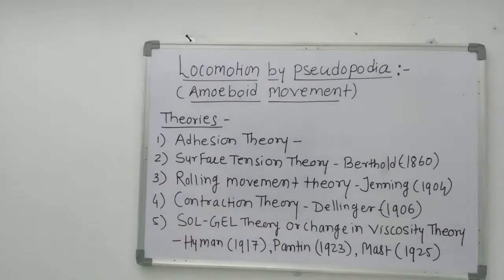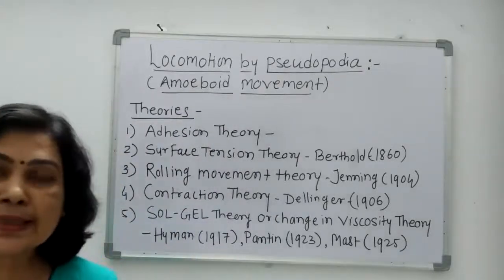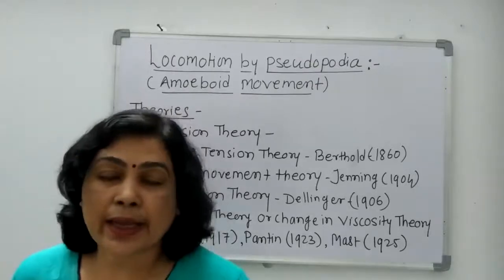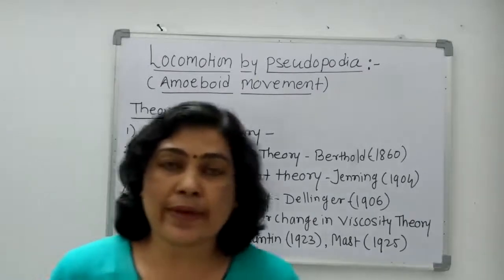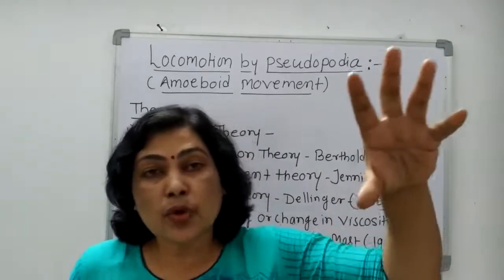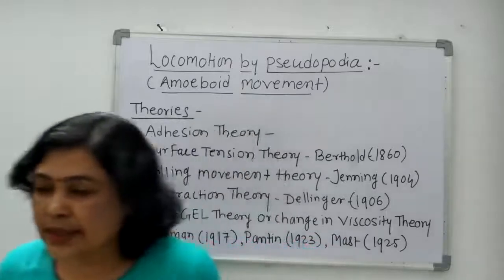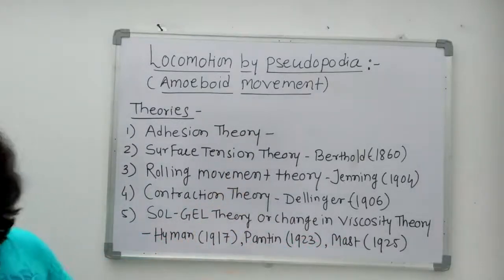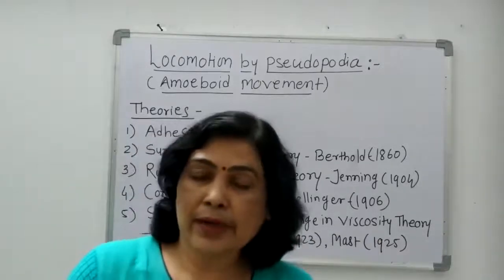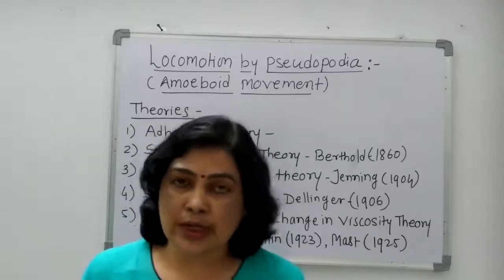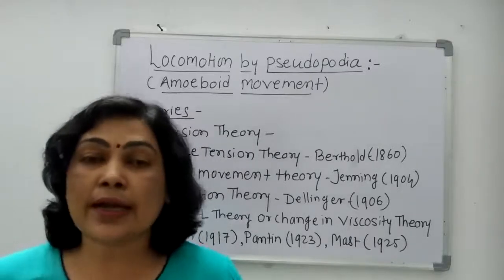Ab next theory hai Theory of Contraction, by Dellinger. Dellinger ko chaar cheezein kehni thin: sabse pehla point yeh tha ki endoplasm mein coarse reticulum ke form mein ek contractile substance hota hai, jiski wajah se pseudopodia banta hai aur locomotion hota hai. Doosra point: yeh organism apna agla hissa extend karta hai, phir pseudopodia banta hai, phir use substratum ke upar rakhta hai, aur phir usse contract kar leta hai — is tarah se woh aage badhta hai. Teesra point: the animal is pulled from the front side and pushed from the back side. Chautha point: there is an exchange of water between ectoplasm and endoplasm for the process of locomotion. Lekin aaj ki tarikh mein jo theory sabse zyada widely accepted hai, us theory ko dekhte hue is theory ko discard kar diya gaya hai.